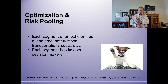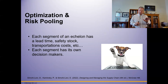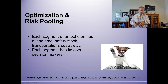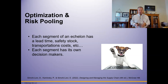In echelon inventory, each stage has its own lead time, safety stock, and transportation costs. The order point formula for the distributor applies a similar approach for the wholesaler and manufacturer as well. Each echelon segment has its own decision makers who use data from their organization to determine service levels, lead times, and safety stock. And of course, everyone wants you to carry as much inventory as possible to save their own costs.